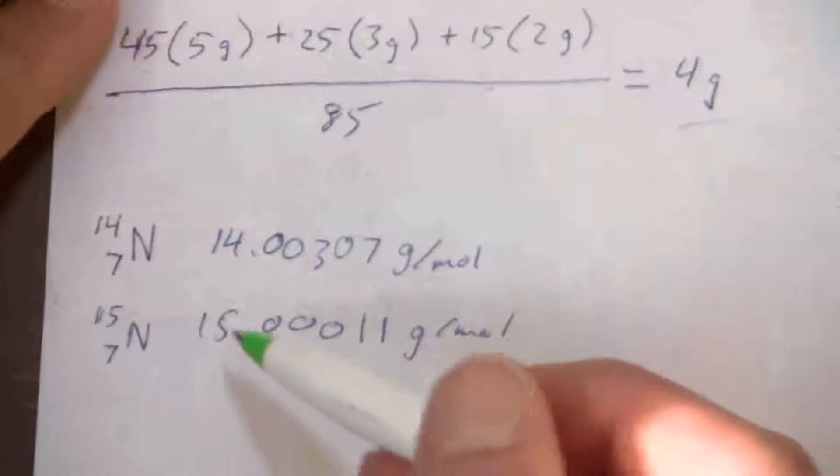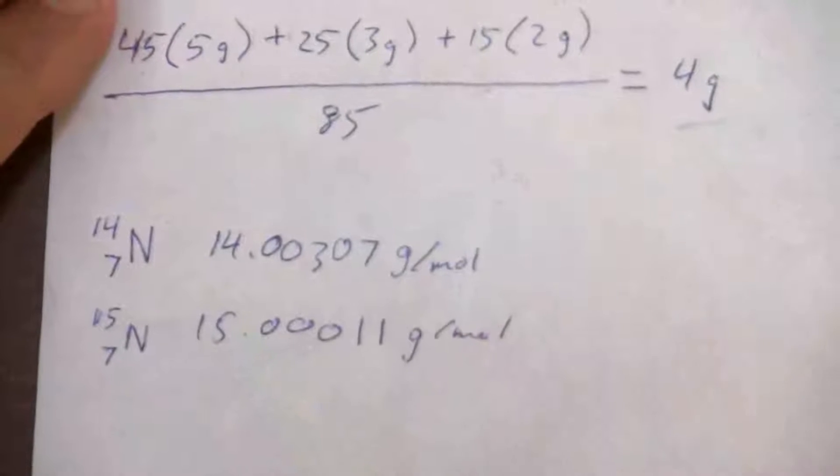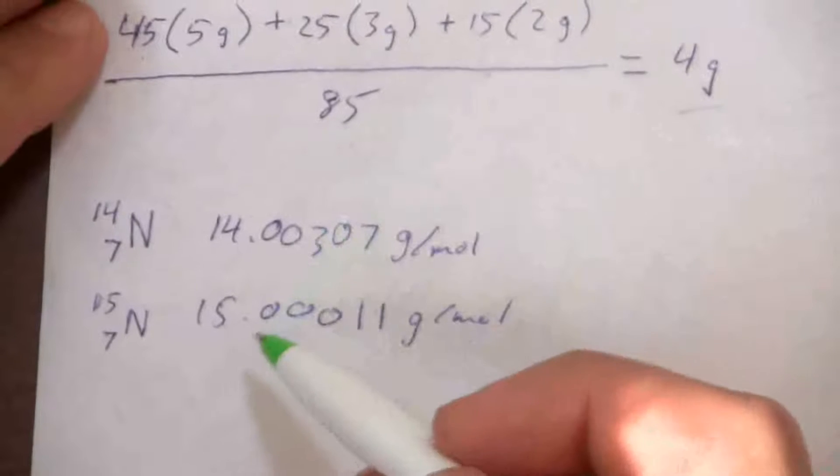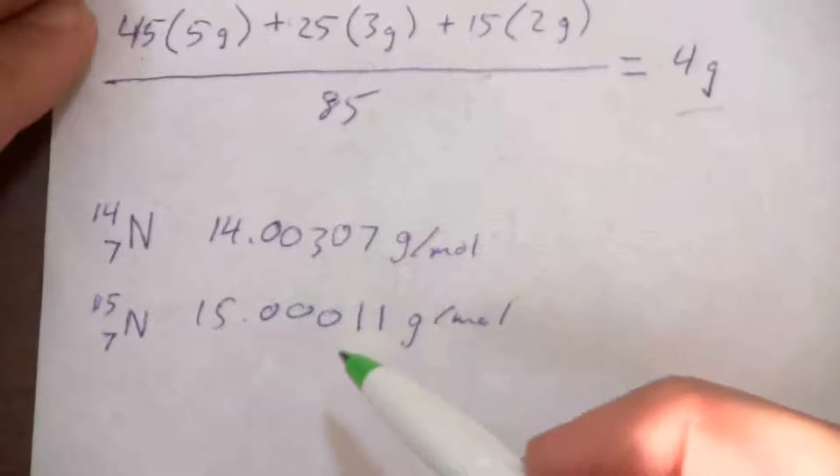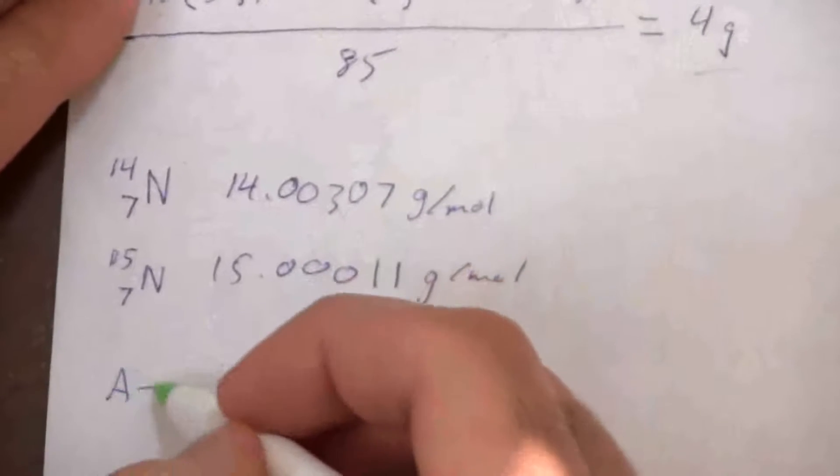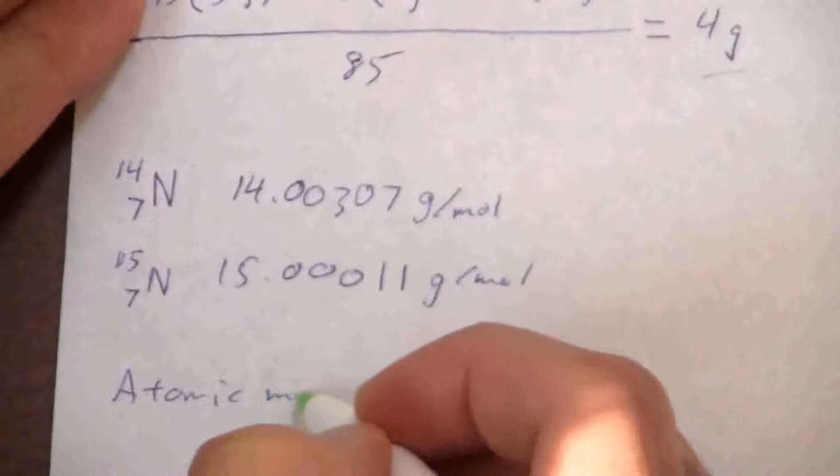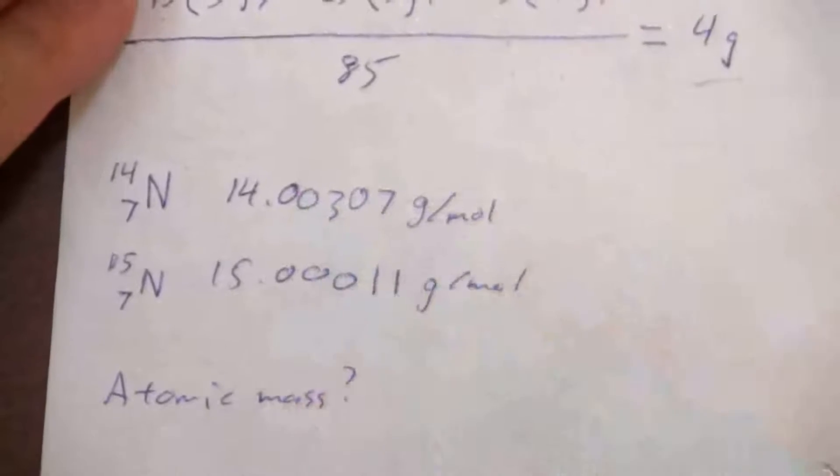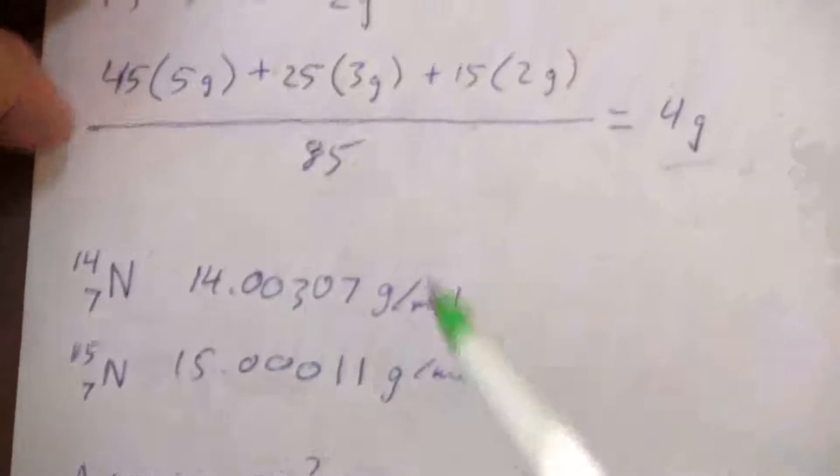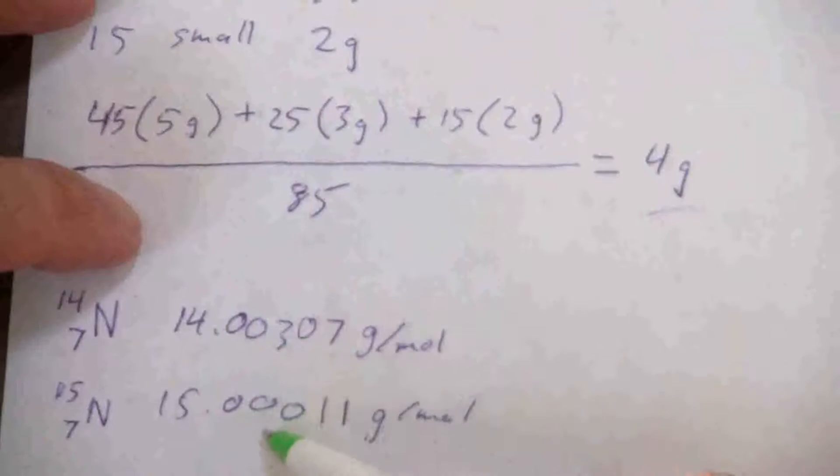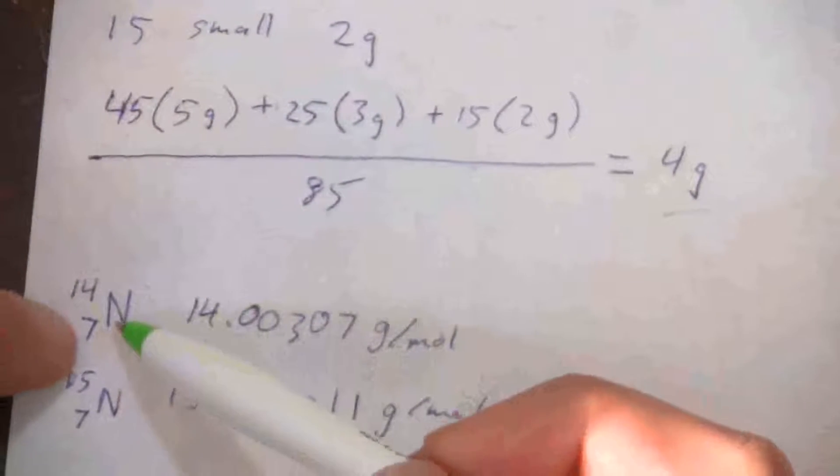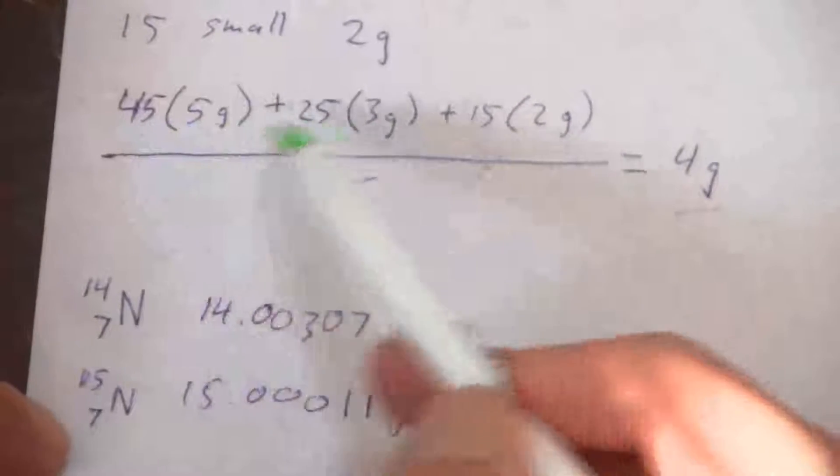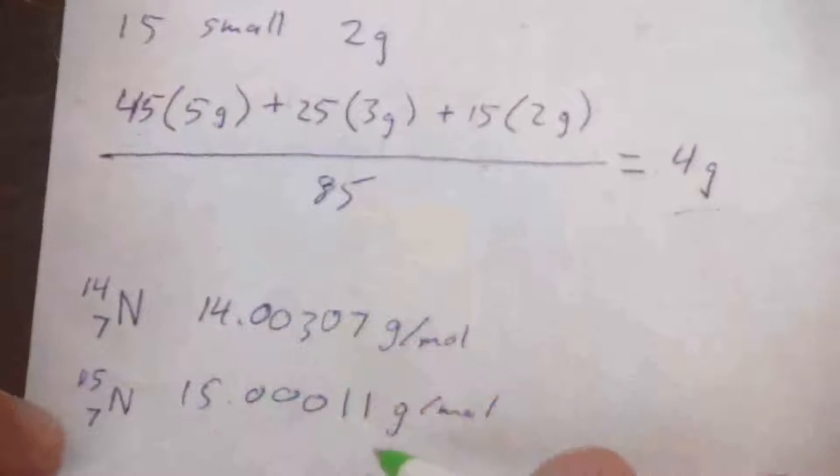And what we want to find is the atomic mass. What is the atomic mass of nitrogen? And I have only those two isotopes. What do I need to know? Well, those are my physical weights of the isotopes. What I need to know is how many of each one there are. That would be my mathematical weight so that I can average those.